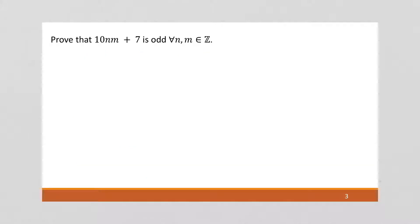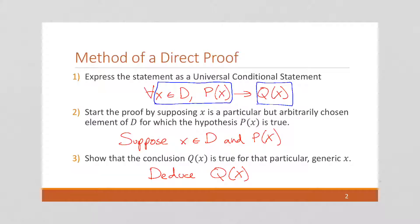So in this example, we are going to prove that 10nm plus 7 is odd for all n and m. I'm going to do step one. Recall step one: we want to write it as a universal conditional statement.